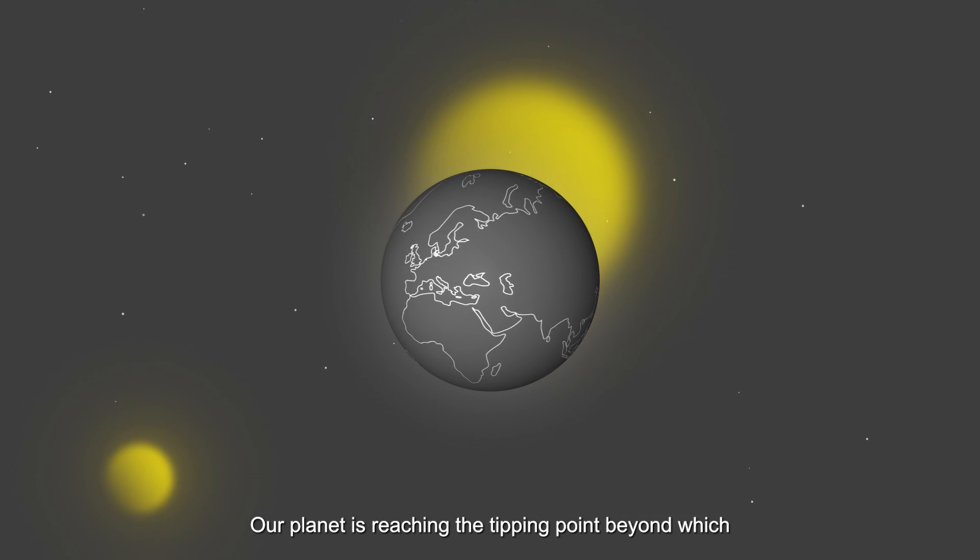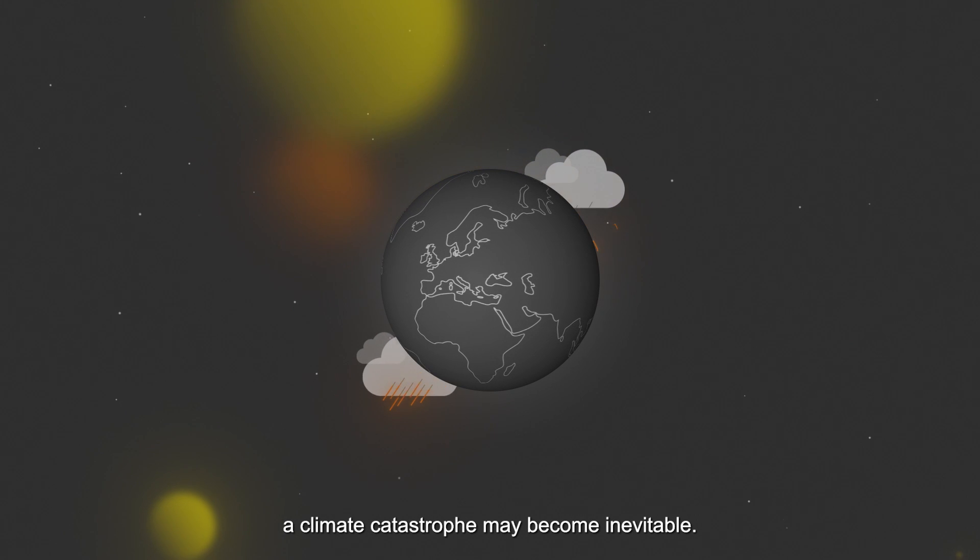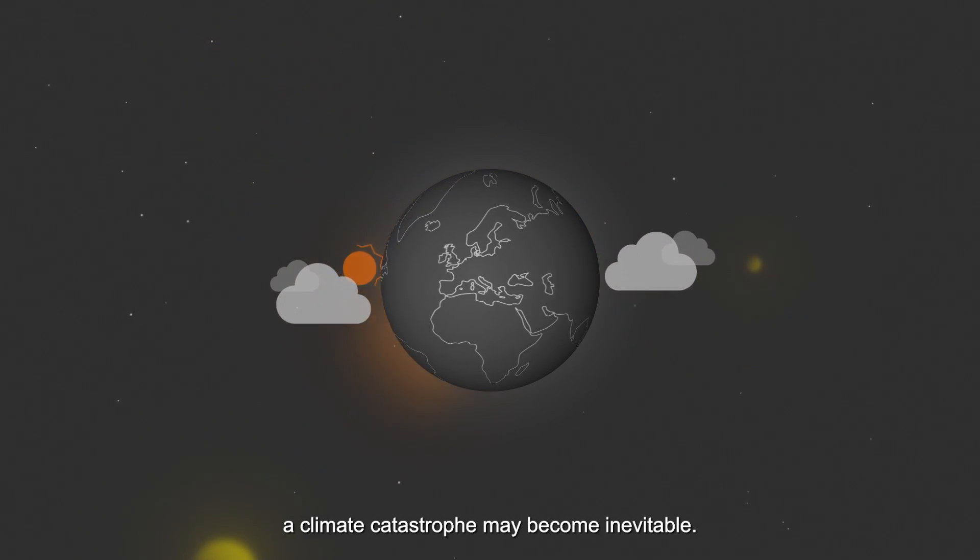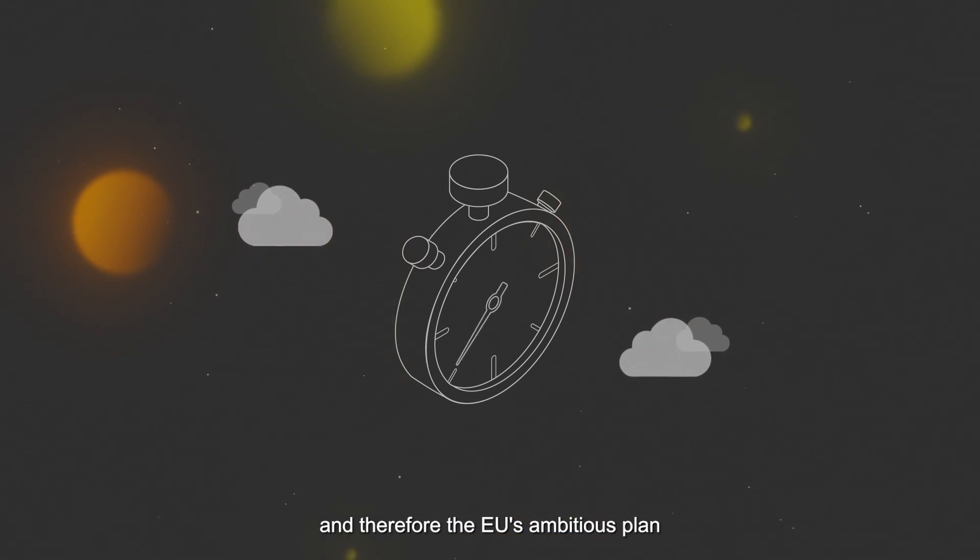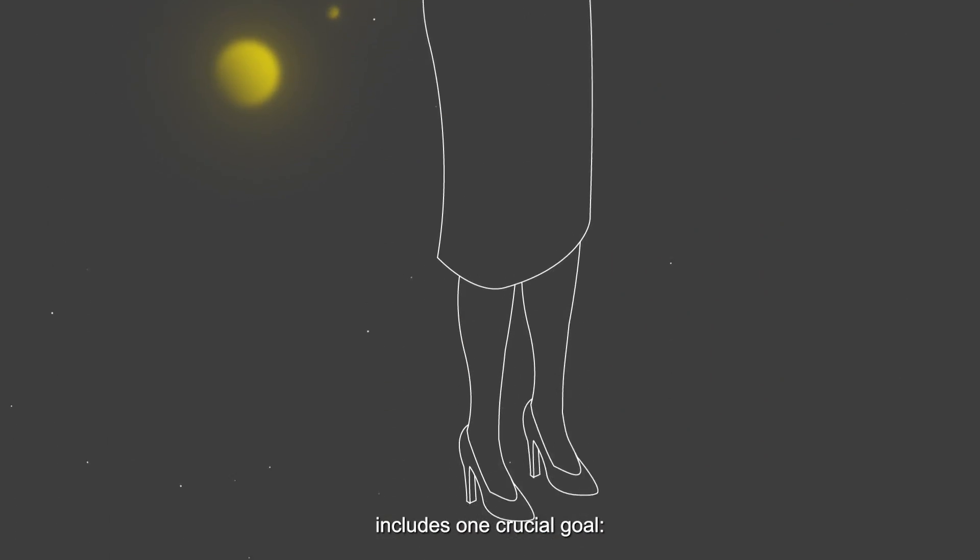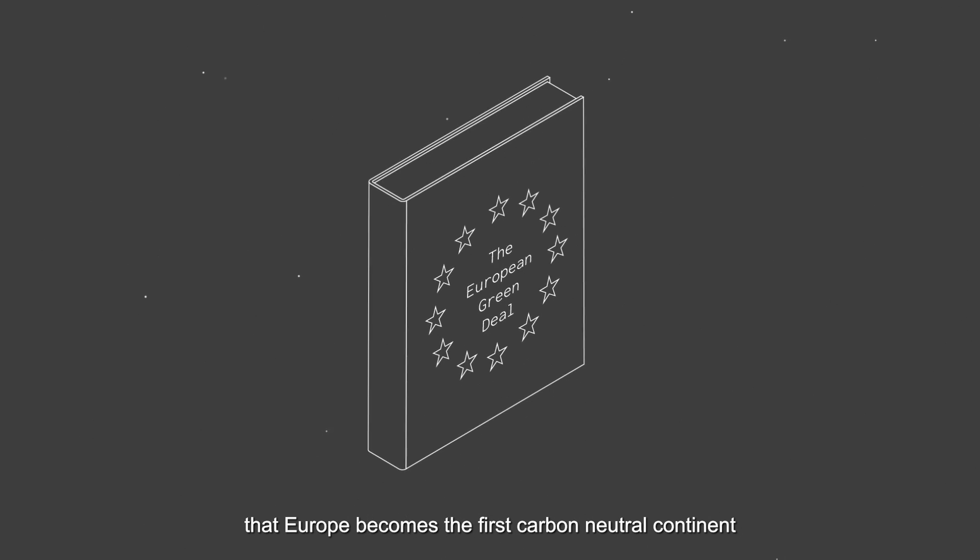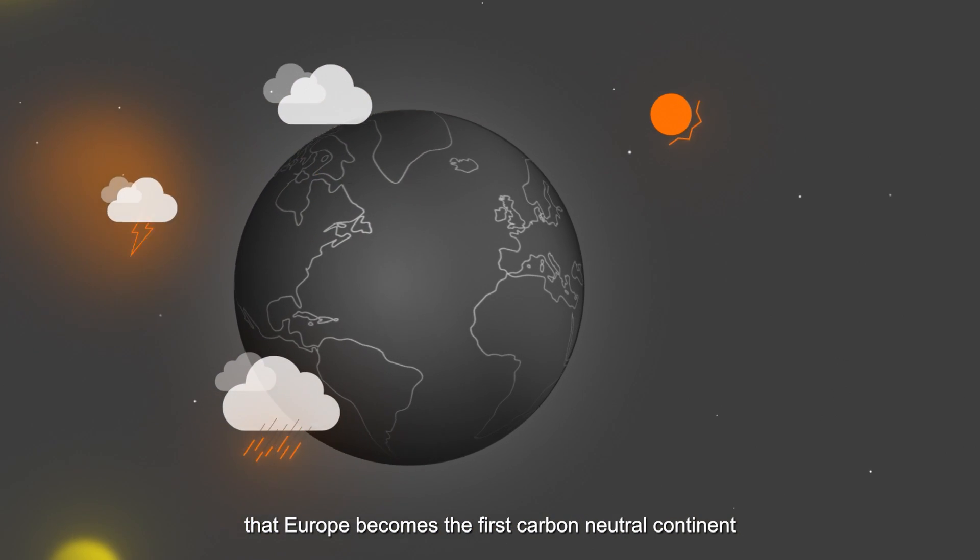Our planet is reaching the tipping point beyond which a climate catastrophe may become inevitable. We need to take swift action, and therefore the EU's ambitious plan includes one crucial goal: that Europe becomes the first carbon neutral continent by 2050.